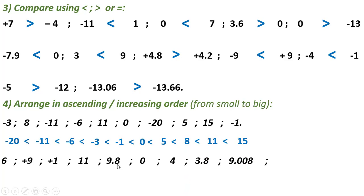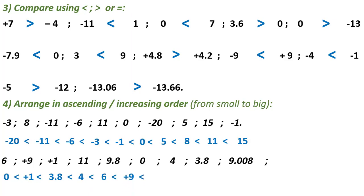For the second set of positive numbers, start with zero, less than plus 1, less than 3.8, less than 4, less than 6, less than 9, less than 9.008, then 9.8, and finally 11.